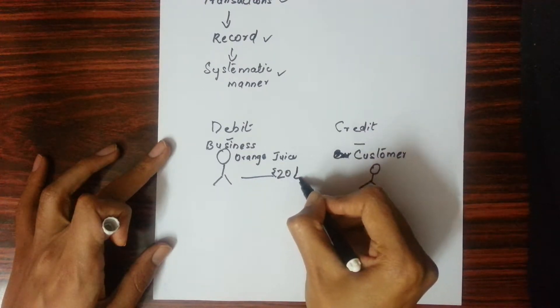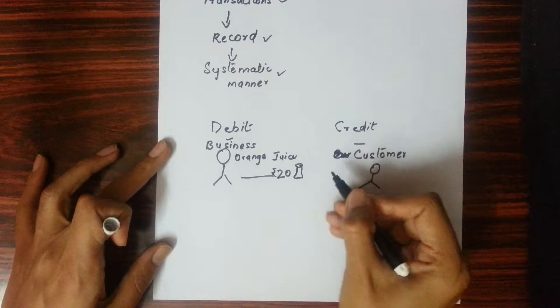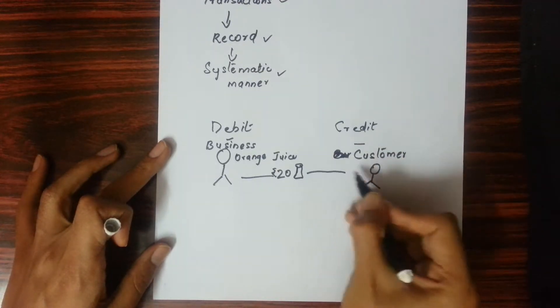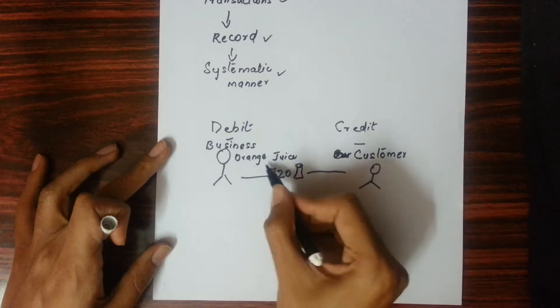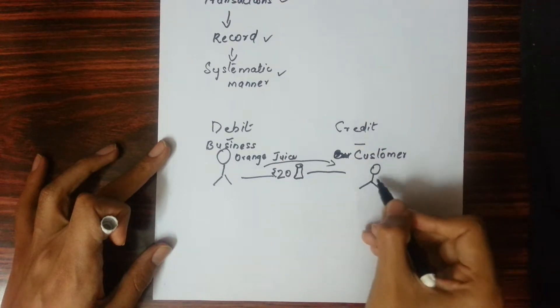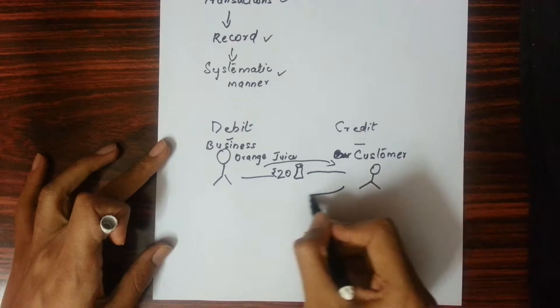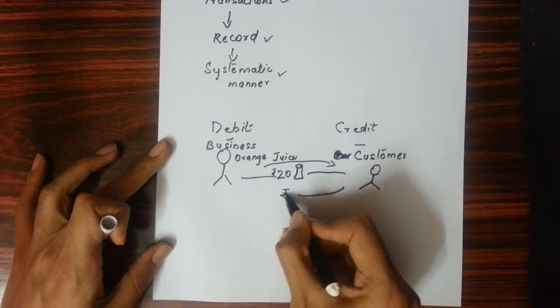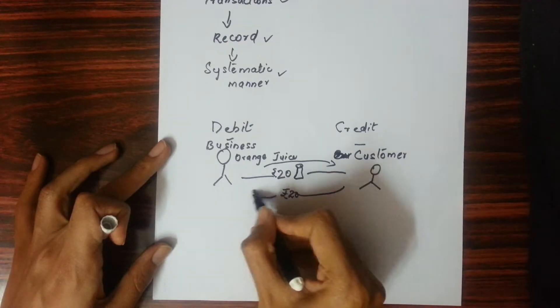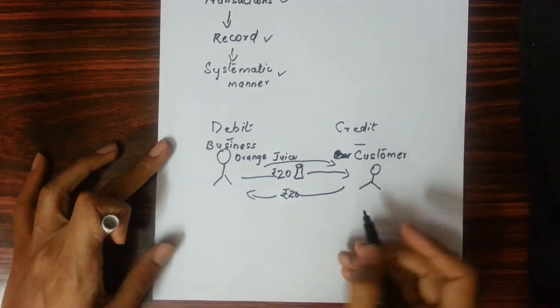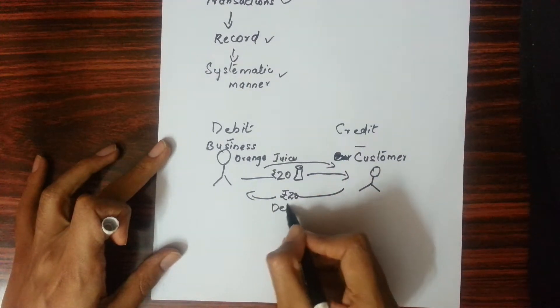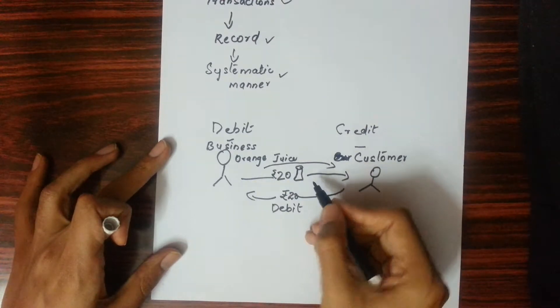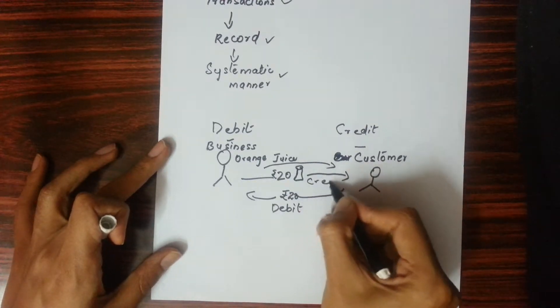If this customer buys from you, then your goods which are worth 20 rupees, they go away. And the customer, after buying, what will he give us? Obviously, he will return money. He gives money. When he gives money, that money comes to us. When something comes to us, that is debited. And when something goes away from us, that is credited.